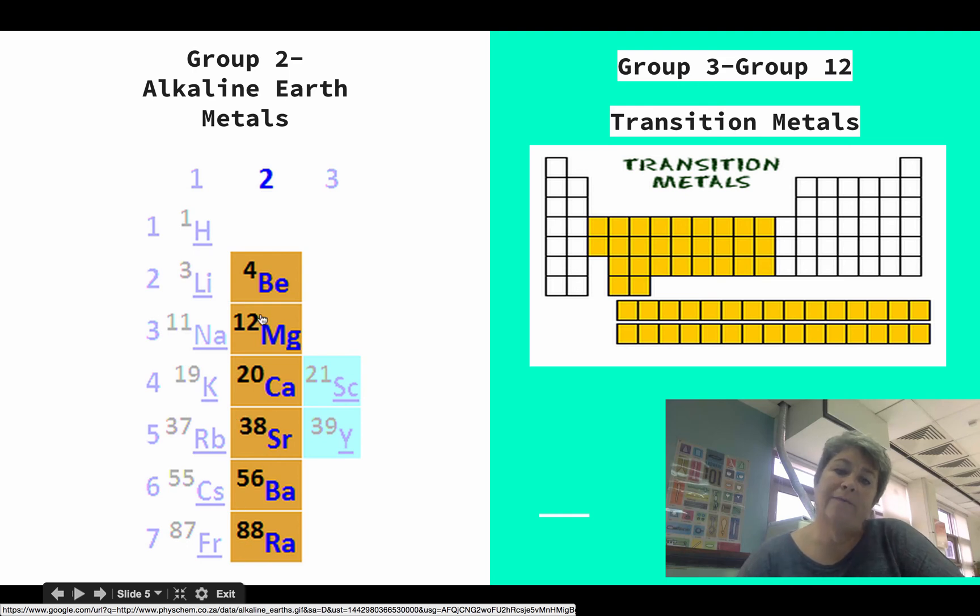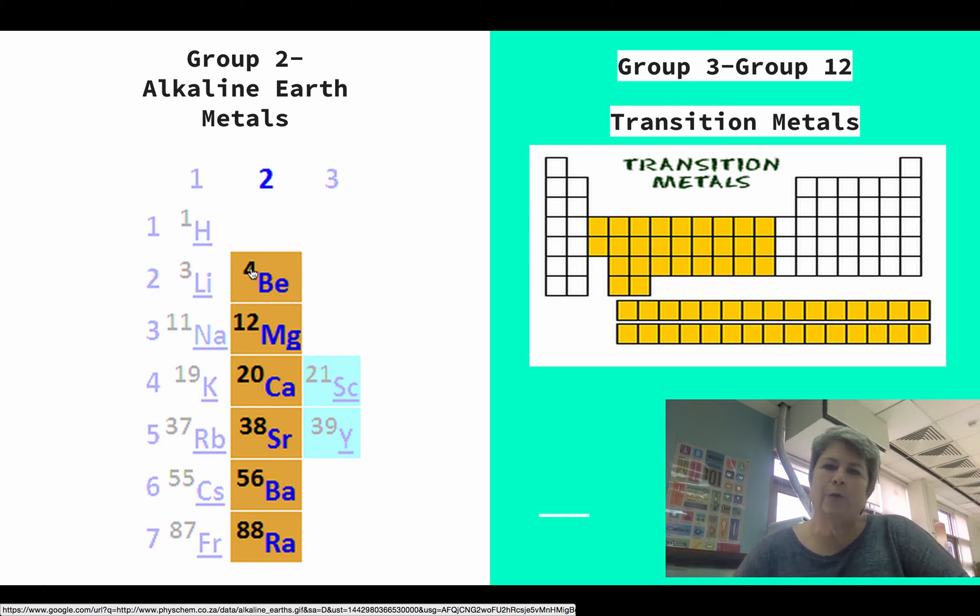Even though all these have very different atomic numbers, differing numbers of protons. I mean, look down here. You've got 88 in this one and 4 in this one. That's a big difference. But when we say group two, it has to do with valence electrons. And guess how many valence electrons every element of this group has?